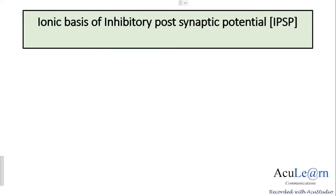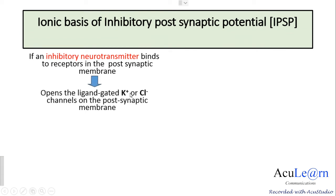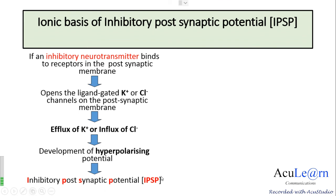Coming to the ionic basis of the inhibitory post-synaptic potential: IPSP is produced by inhibitory neurotransmitters. When an inhibitory neurotransmitter binds to receptors in the post-synaptic membrane, it causes the opening of ligand-gated potassium or ligand-gated chloride channels. This leads to efflux of potassium or influx of chloride ions — potassium moves from inside the cell to the extracellular fluid, while chloride moves into the cell from the extracellular fluid. Both of these make the membrane potential more negative, causing a hyperpolarizing potential called the inhibitory post-synaptic potential or IPSP.